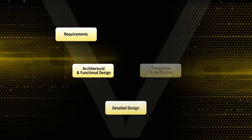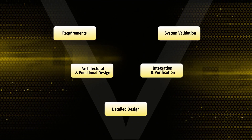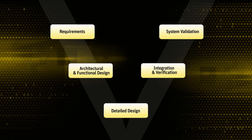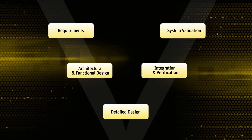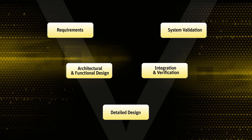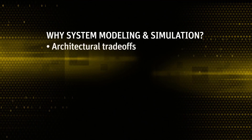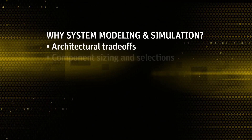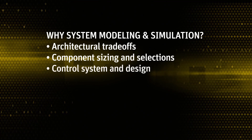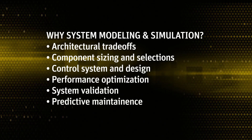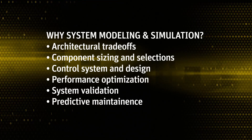System modeling and simulation can be used throughout the design process to understand and optimize the complex interactions of subsystems and engineering domains. Models can be described at varying levels of fidelity and detail, and can be used to evaluate architectures, size components, optimize performance, and validate system operation across a range of conditions.